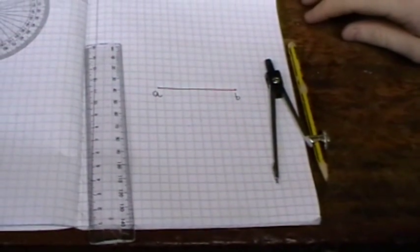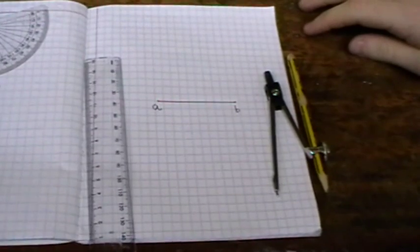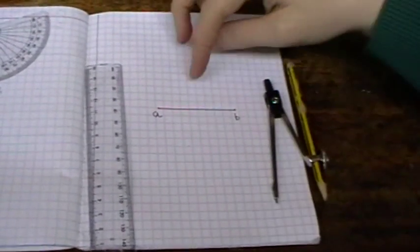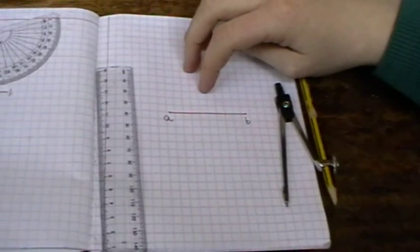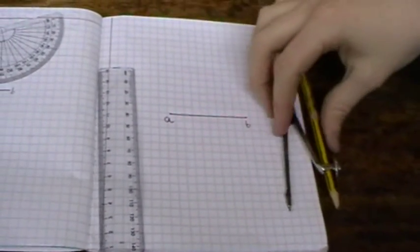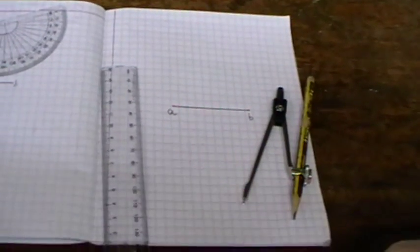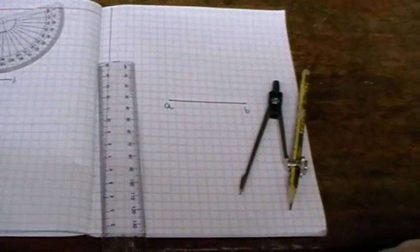To construct the perpendicular bisector of a line segment AB, here is a line segment AB. We will use a compass and a ruler to construct the perpendicular bisector.